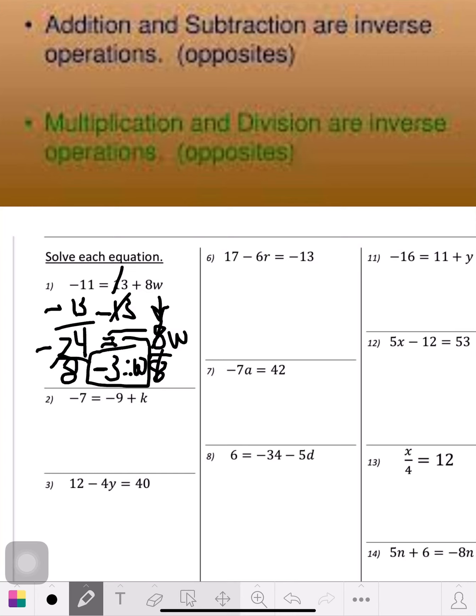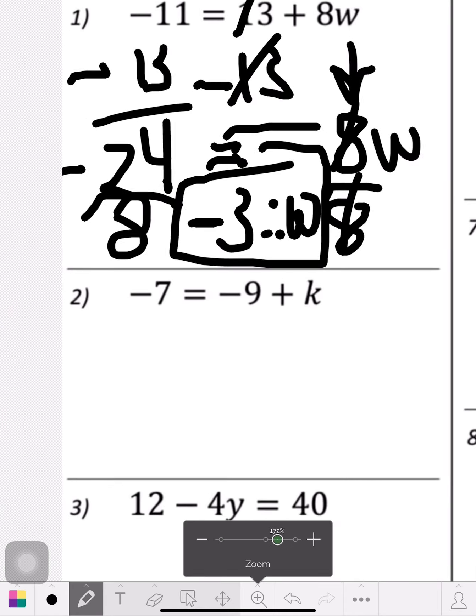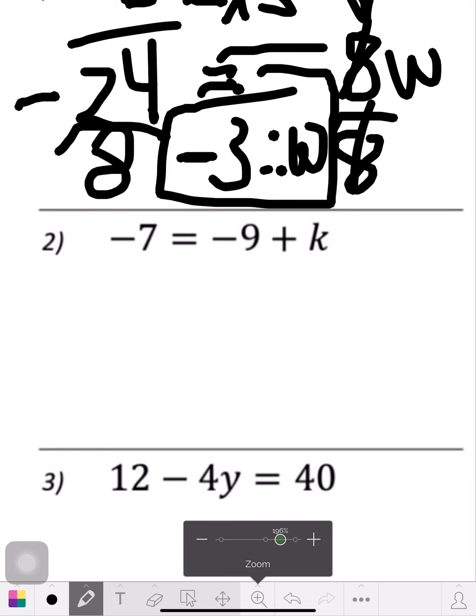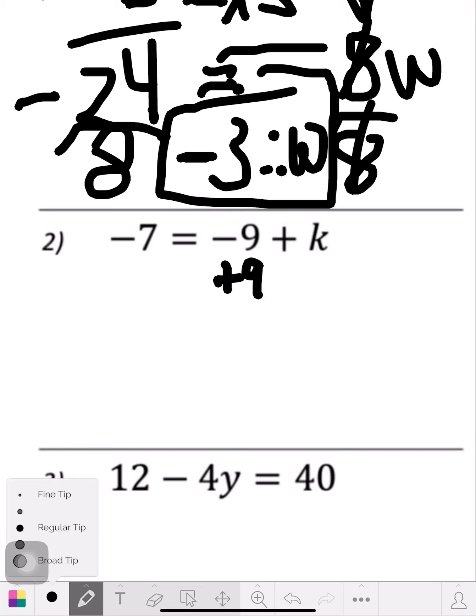That's the answer: negative 3 equals w, and that's all there was to that. I'm going to blow up the other one just to have it a little bigger so we got a little more space. Now your next problem—I'll only do a few of these then I'll leave them for you. We have negative 7 equals negative 9 plus k. We got to get the k by itself, so the opposite of negative 9 is a positive 9, so I'd add 9 to both sides.